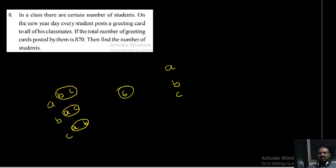From C we will get two greeting cards — totally six greeting cards. So if there are three students, we will get six greeting cards. What happened? A has two chances, B can post two, C can post two — two plus two plus two — that is total greeting cards equal to six.